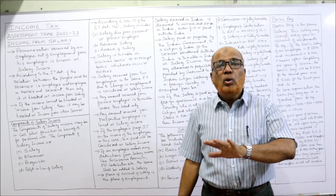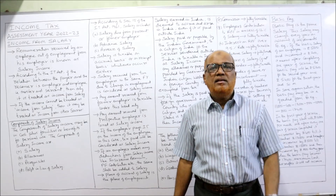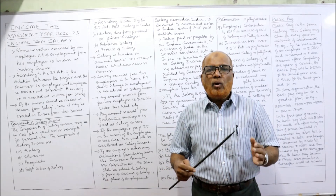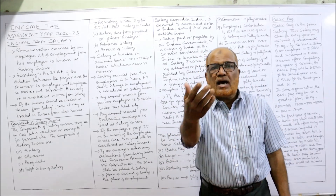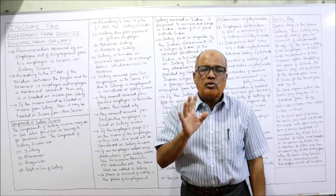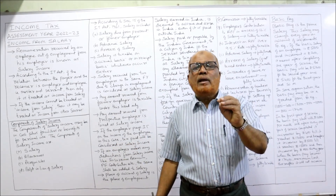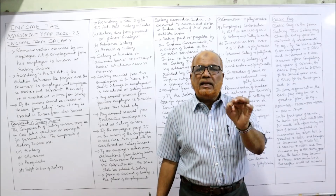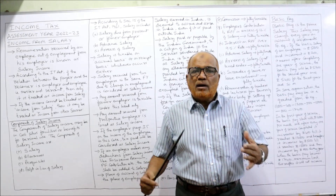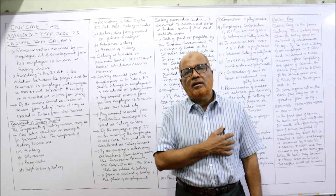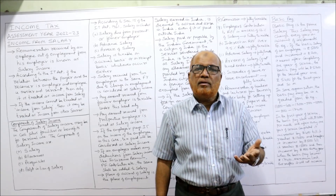Second, advanced salary received — not loans. If a loan is given by the employer to the employee, that loan amount is not salary income. If advanced salary is given — for example, the employee requests the employer to pay the next six months salary in advance — that advanced salary will also be treated as part of salary income. Third, arrears of salary: salary due but not paid. For example, during the current financial year, if the employer paid only 10 months salary, two months accrued but not received — income tax says accrued salary is also income from salary. So while computing, we take all 12 months.